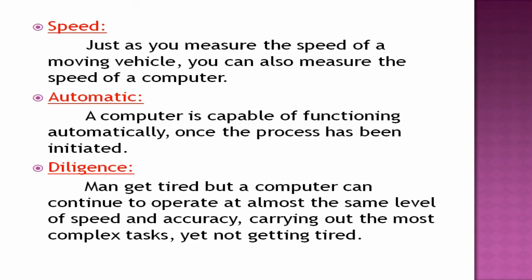Next characteristic: diligence. Man gets tired, but the computer can continue to operate at almost the same level of speed and accuracy. If you sit in school from 8 to 2, you start fresh but gradually get tired. You cannot work with the same accuracy and speed throughout 12 hours. But the computer will work at the same level of speed and accuracy, carrying out complex tasks without getting tired at all.